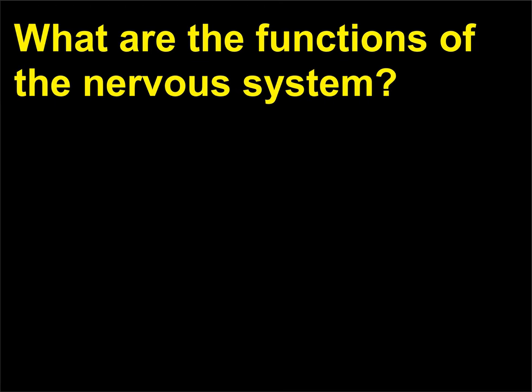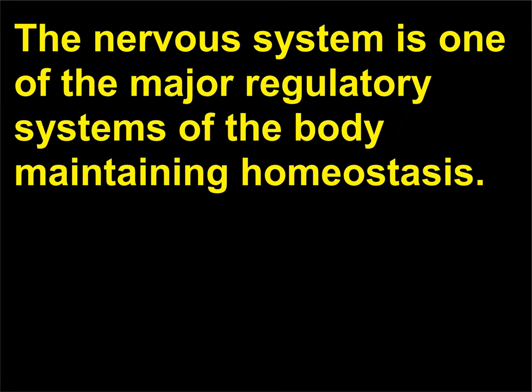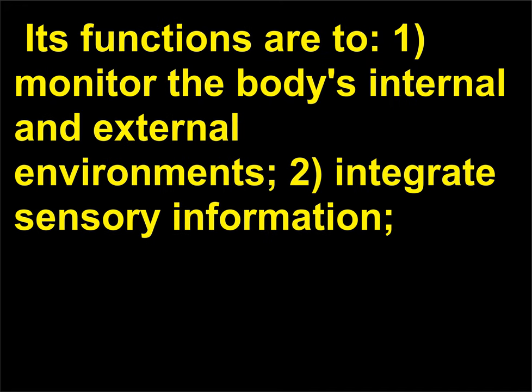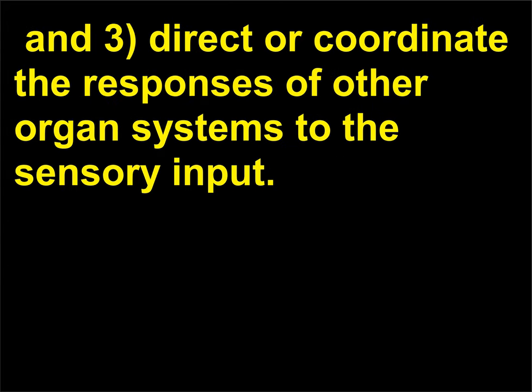What are the functions of the nervous system? The nervous system is one of the major regulatory systems of the body, maintaining homeostasis. Its functions are: one, monitor the body's internal and external environments; two, integrate sensory information; and three, direct or coordinate the responses of other organ systems to the sensory input.